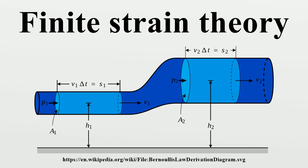The displacement of a body has two components: a rigid body displacement and a deformation. A rigid body displacement consists of a simultaneous translation and rotation of the body without changing its shape or size. A change in the configuration of a continuum body can be described by a displacement field, which is a vector field of all displacement vectors for all particles in the body, relating the deformed configuration with the undeformed configuration. Relative displacement between particles occurs if and only if deformation has occurred. If displacement occurs without deformation, then it is deemed a rigid body displacement.